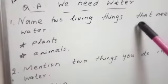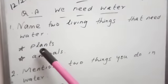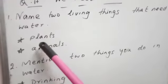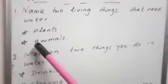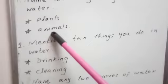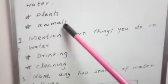What are the two living things that need water? Good. Plants as well as animals. P-L-A-N-T-S plants. A-N-I-M-A-L-S animals.